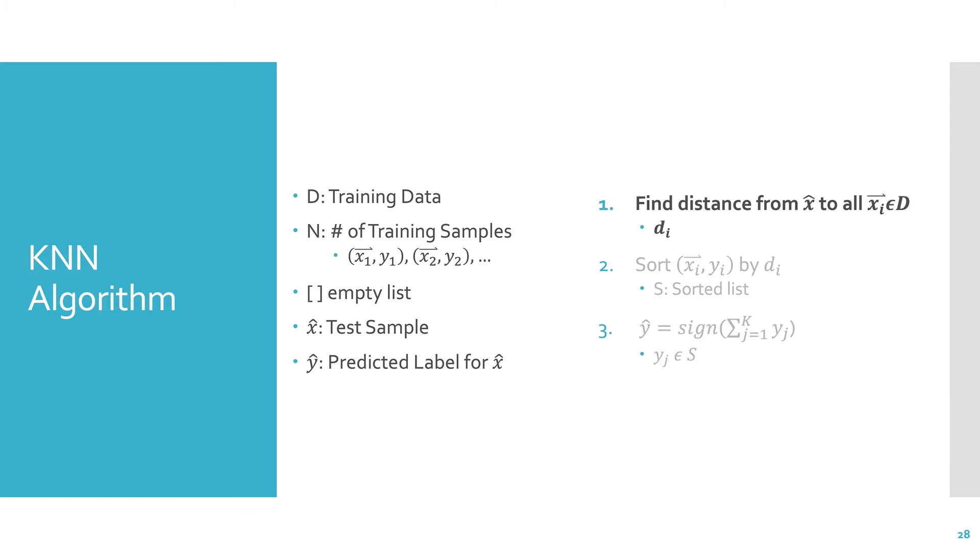So finding the distance from the test point to all training points is going to be a Euclidean distance. We've talked about that a lot. Then we just sort, like I said. And then we calculate the predicted label. And remember, the labels are negative 1 or positive 1. So doing this operation is just the voting. And it results in a predicted label.